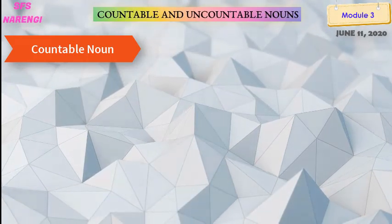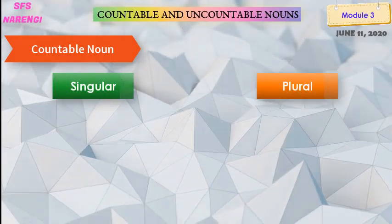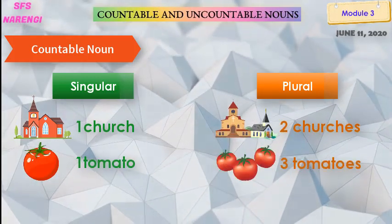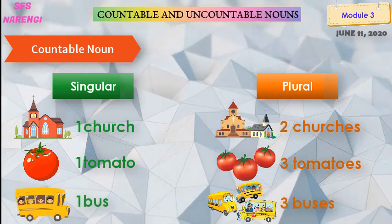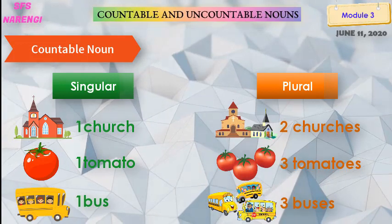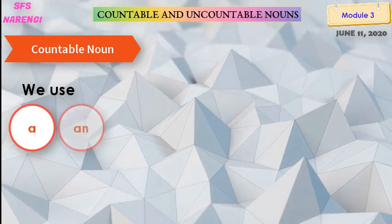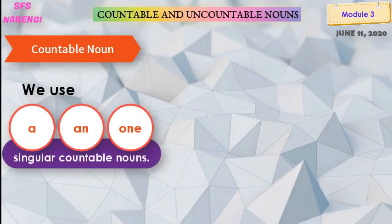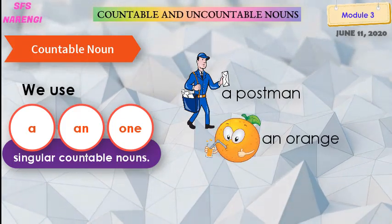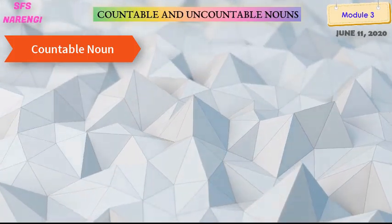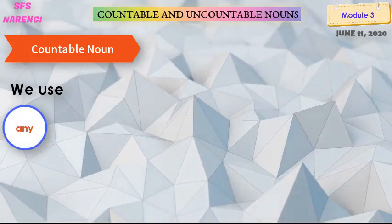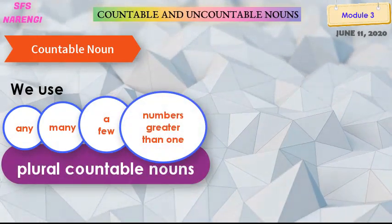Countable nouns have singular or plural forms. For example: one church, two churches; one tomato, three tomatoes; one bus, three buses. We use 'a,' 'an,' or 'one' before singular countable nouns — for example: a postman, an orange, one chair.